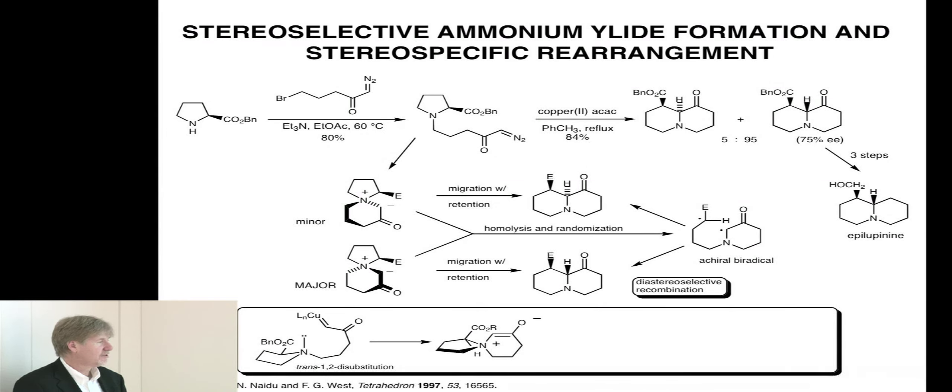Now if we do the homolysis of this carbon-nitrogen bond, we get to this biradical. We just broke the bond between this carbon and this nitrogen, and you can see that now these two radicals are very close together.